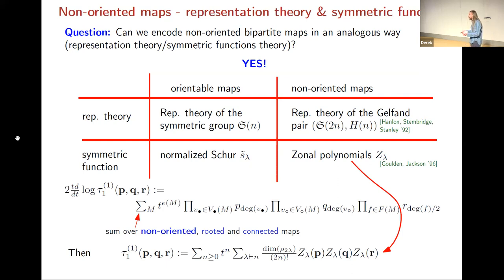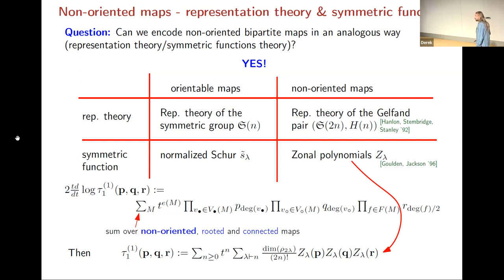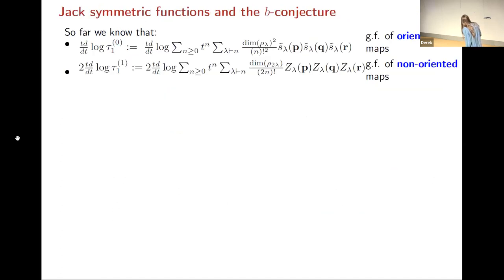The insight of Goulden and Jackson was that matchings can encode bipartite maps on arbitrary surfaces — both orientable and non-orientable. Using this theory and the theory of symmetric functions, it turns out that zonal polynomials play an analogous role to Schur symmetric functions, but now for counting all bipartite maps. The generating function of all bipartite maps — tracking degrees of black vertices, white vertices, and faces — can be written in terms of zonal symmetric functions.